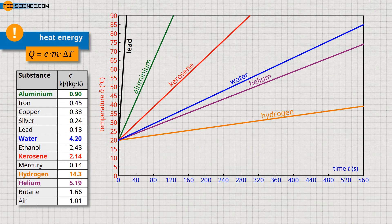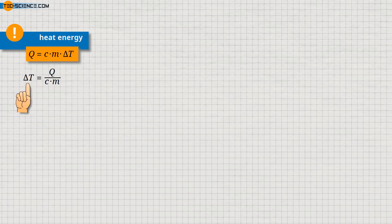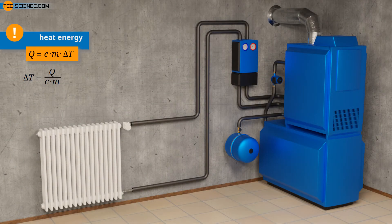We can see this directly if we solve the given formula with respect to the temperature change. The greater the specific heat capacity in the denominator, the smaller the temperature change for a given amount of heat. This is why water is particularly suitable as a coolant or as a medium for transporting heat in radiators.